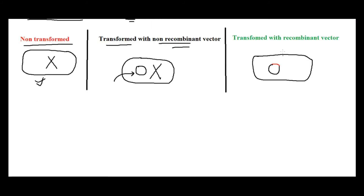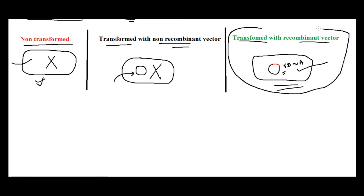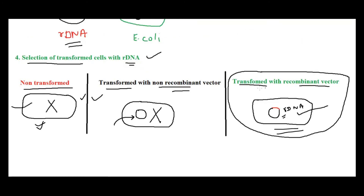The third possibility is transformed cells with the recombinant vector — cells that have actually taken up the rDNA. This is exactly what we are looking for. You can have a non-transformed cell, or a transformed cell with a simple plasmid (non-recombinant vector), or transformed cells with your recombinant vector. The colonies of this desired combination are comparatively fewer than the other two types.